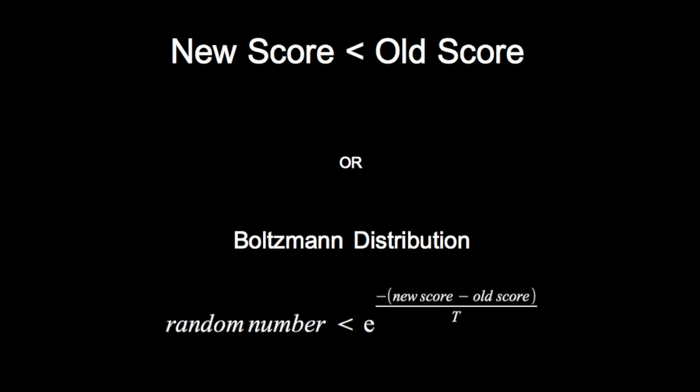To find out, we use the Boltzmann distribution. Considering the difference between the old score and the new score as our energy for the system, we compare a random number to the number e to the negative difference of the scores divided by T. If the random number is smaller than this value, then we keep the new configuration. Simple.